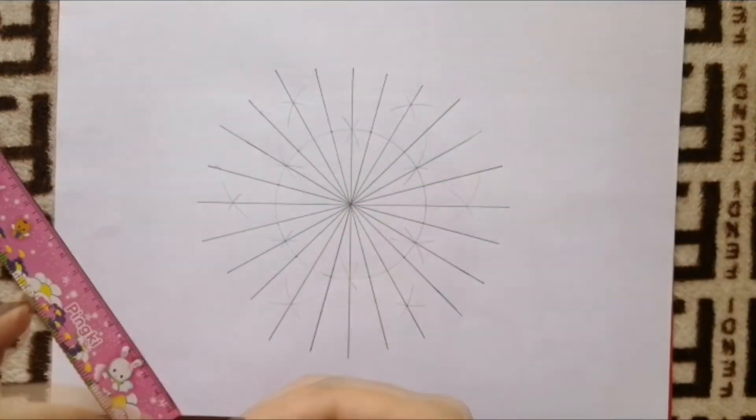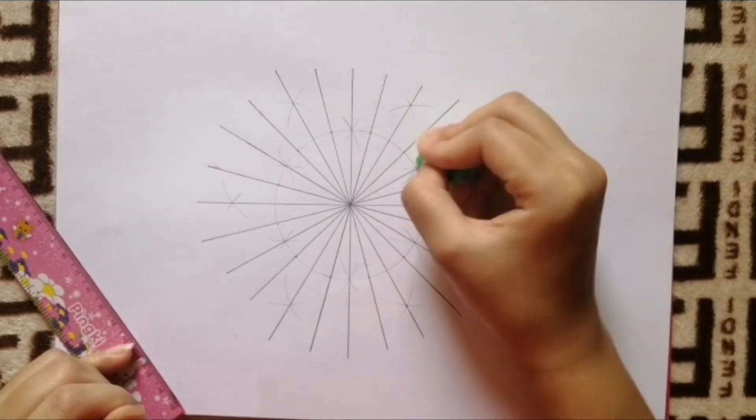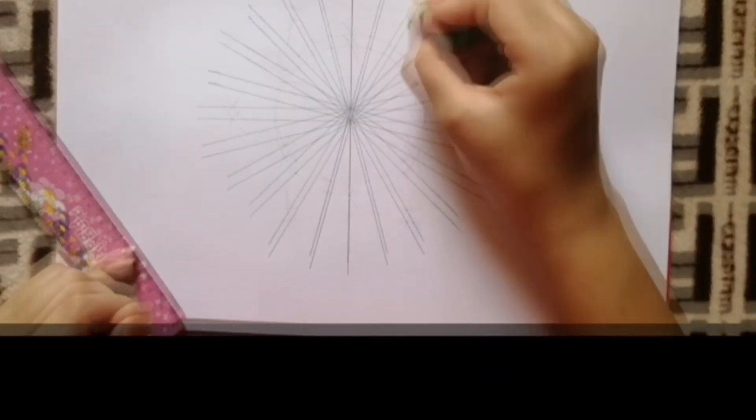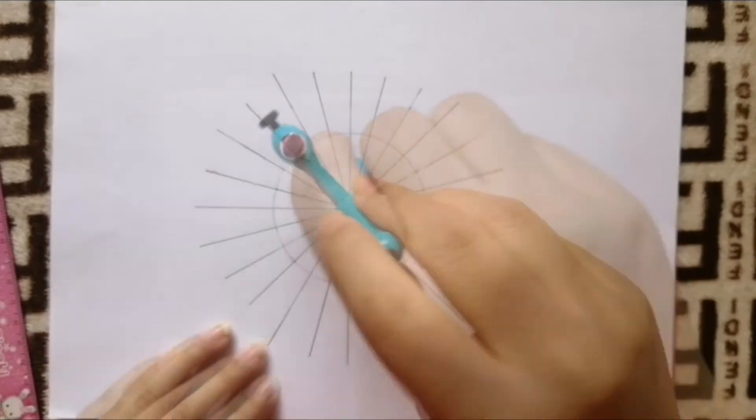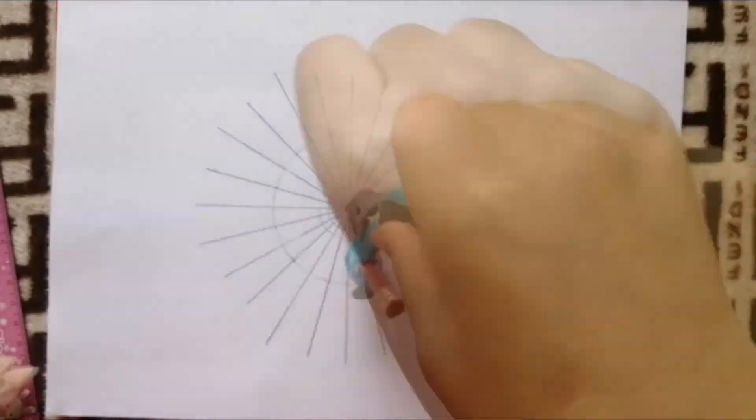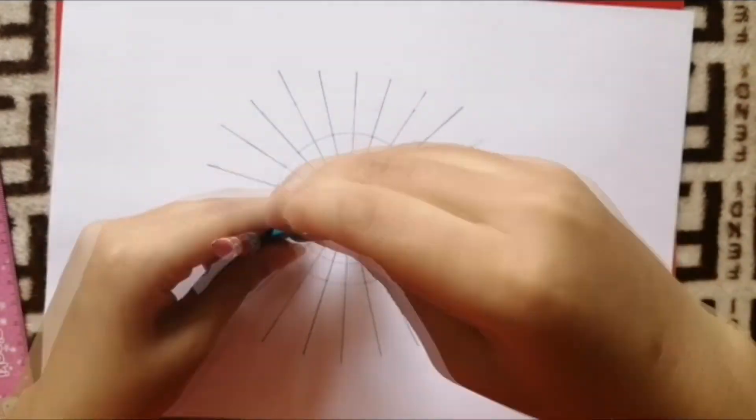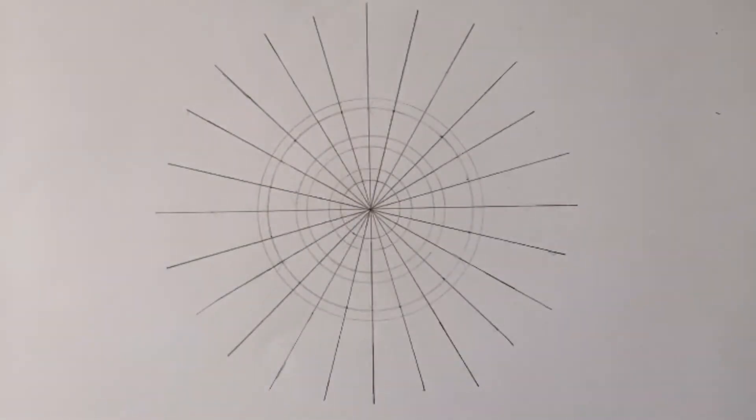Then carefully erase the crosses and draw circles using a compass according to your plans and designs. And here you go, your grid is ready.